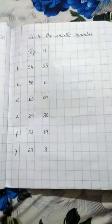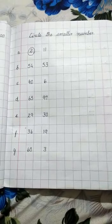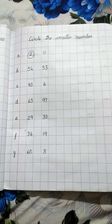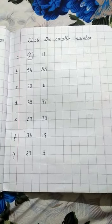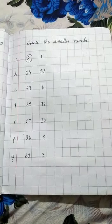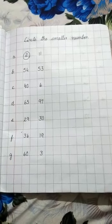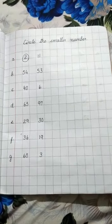Circle the smaller number. Now which number is smaller? 2 or 11? 2 is smaller. So circle the number 2. In the same way, you circle all the smaller numbers and complete it.